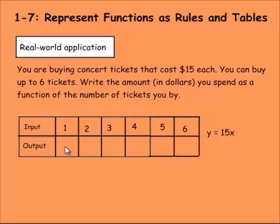So if you bought one ticket, it would be 1 times 15. That would be $15. If you bought two tickets, it would be 15 times 2. That would be 30. Three tickets would be 15 times 3. That would be 45. And I think you're getting the pattern. 15 times 4 is 60. 15 times 5 is 75. And 15 times 6 is 90. So that's how we put this table together based on this real world application.